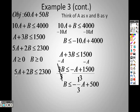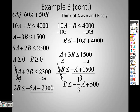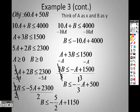Now let's take a look at this one. To get B by itself, I would divide by, or sorry, minus 5A. So I get 2B is less than or equal to negative 5A plus 2,300. Divide both sides by 2. And I end up getting B is less than or equal to negative 5 halves A plus 1150.